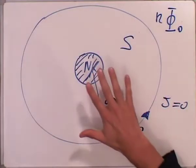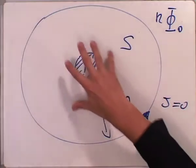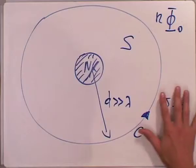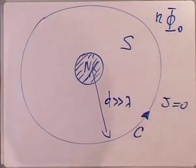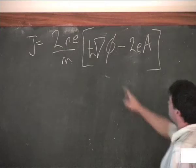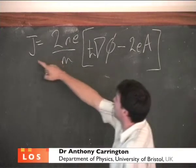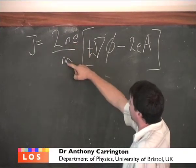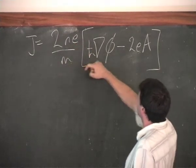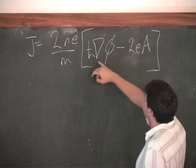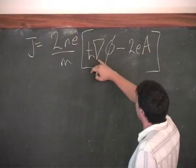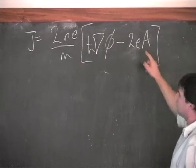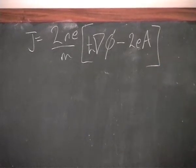Very far from the core, the current is strictly zero because we have an exponential decay. This is the relationship between the current, number density, electron charge, mass, the gradient of the phase of the wave function, and A the vector potential.